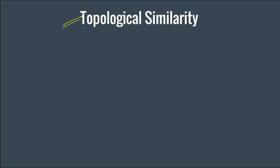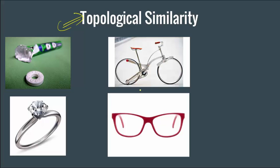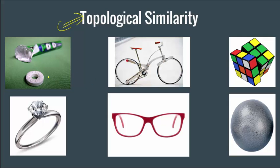One more example — topological similarity. How do we find similarity between materials from a topological angle? I will present six different items. This polo mint and this ring are both topologically similar. If I take the topological invariant as the hole, here you have one hole, and here also you have one hole. Here you have two holes and similarly here again you have two holes.